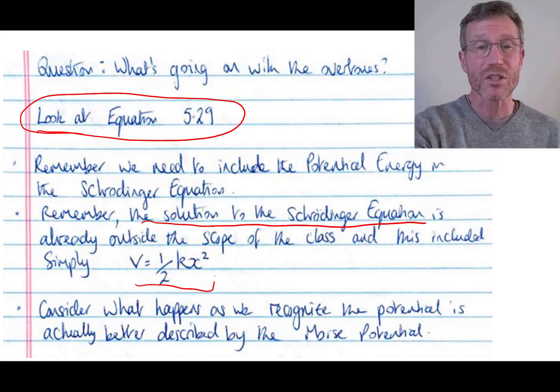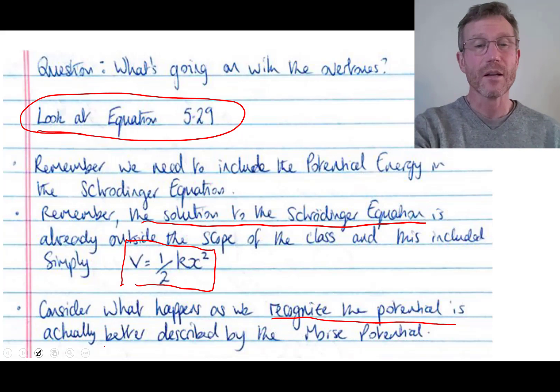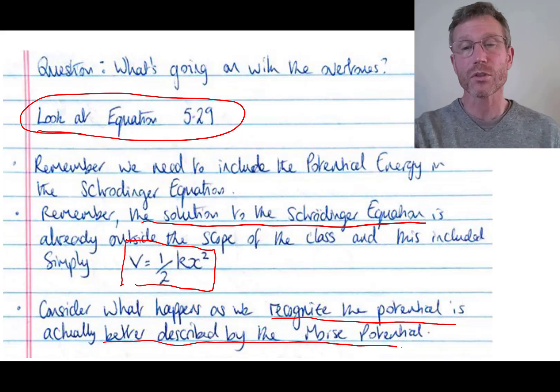the solution to that Schrodinger equation is already outside the scope of the class. This was when we were just considering the potential energy to be V equals half kx squared. When we recognize that the potential is actually better described by this Morse potential, then we have to start adding